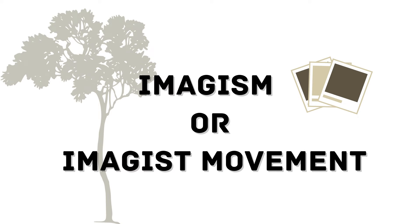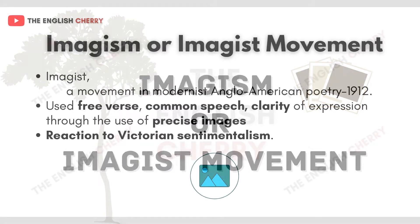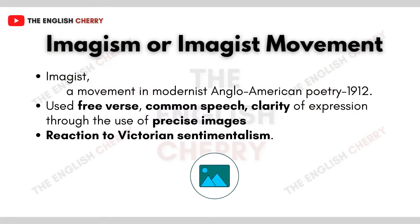In today's video we will learn about Imagism or the Imagist movement. Imagism was a movement in modernist Anglo-American poetry that originated in 1912. It advocated the use of free verse, common speech patterns, and clarity of expression through the use of precise images, as a reaction to Victorian sentimentalism.